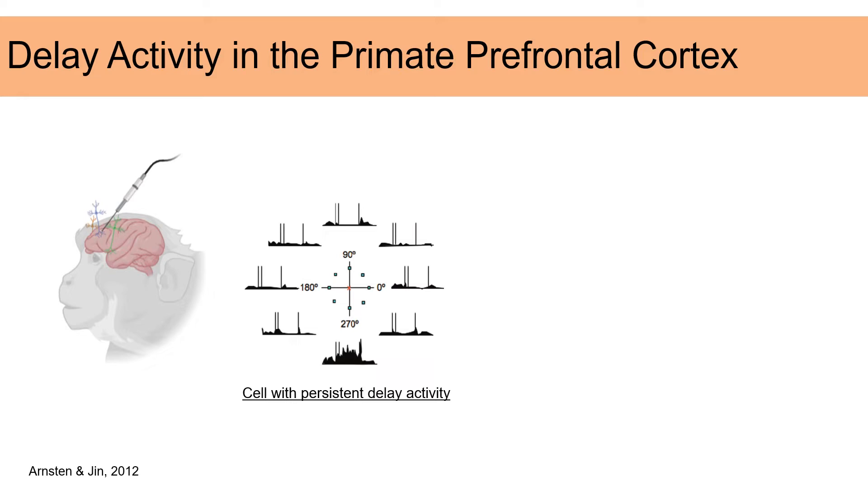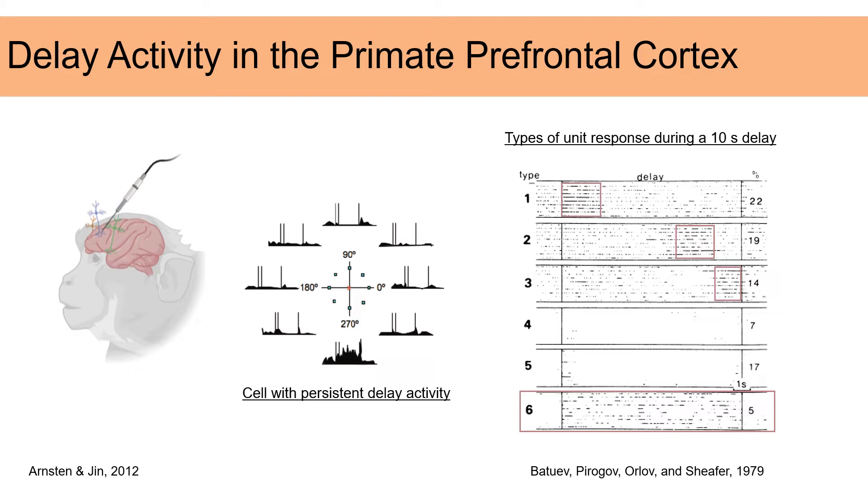Some work in the 1970s described single neuron persistent activity as a primary mechanism for maintaining working memory information in the primate prefrontal cortex. However, during the same period, contributing evidence was also being collected. The Schaefer group discovered that it was more common to find cells that only responded during one part of the delay period.